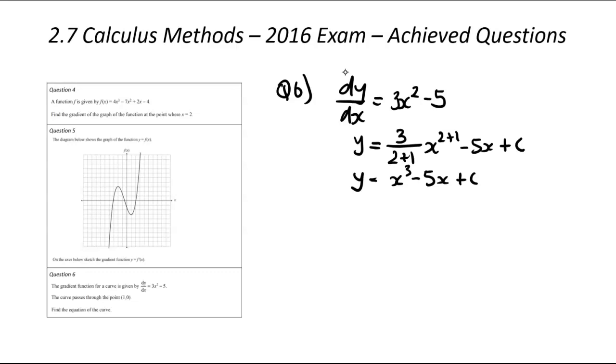The issue here is the plus c is really annoying in integration. So we need to find or substitute in another point to then figure out the c. And we've been given that at 1 comma 0. With that point 1 comma 0, we know that x is equal to 1 and y is equal to 0.